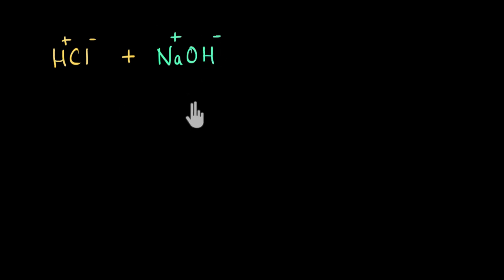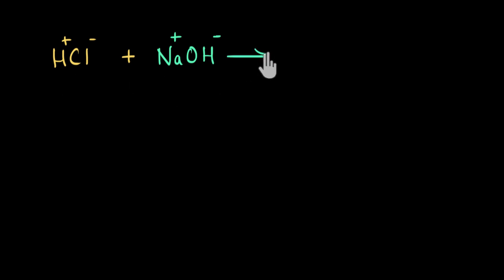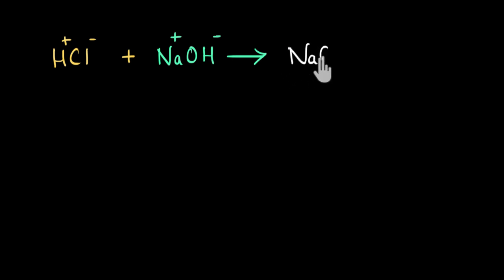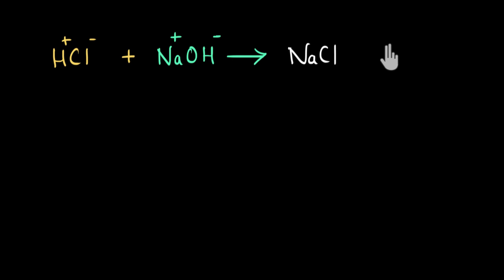When I mix these two together, a double displacement reaction happens — ions exchange positions. Sodium will get attracted to Cl⁻ ion, and finally we get NaCl, which is a salt — the common salt that we eat. And H⁺ ion will get attracted to OH⁻ ion, and finally we get water, H₂O.